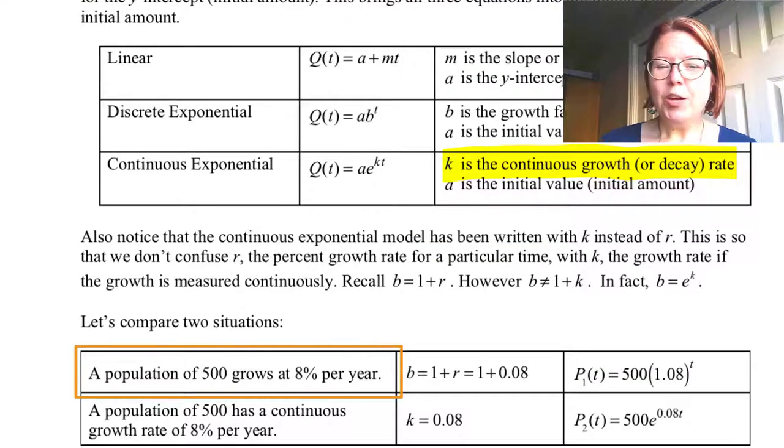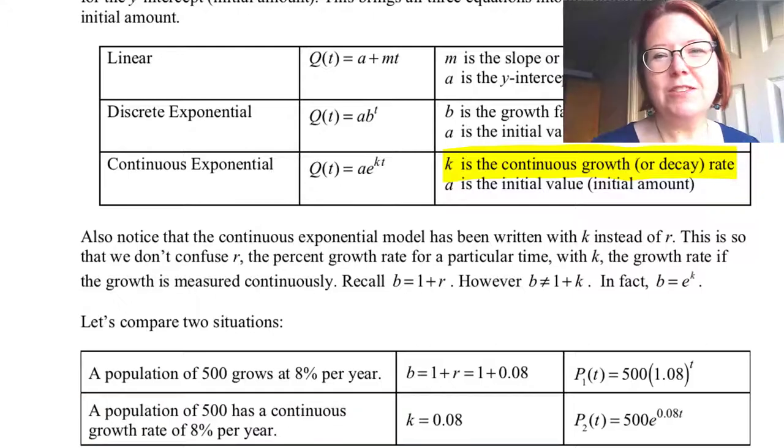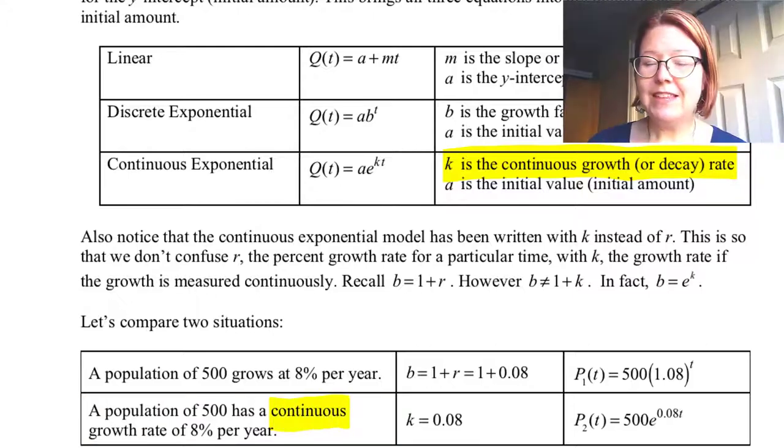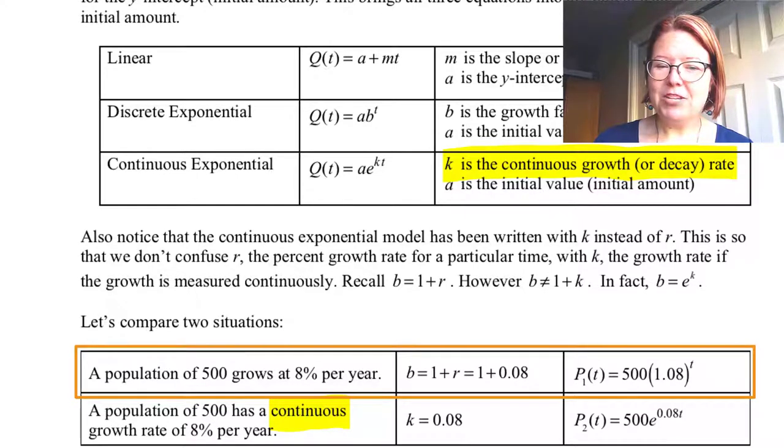Let's compare two situations. First scenario, a population of 500 grows at 8% per year. Second scenario, a population of 500 has a continuous growth rate of 8% per year. The major difference between those two problems is the word continuous.